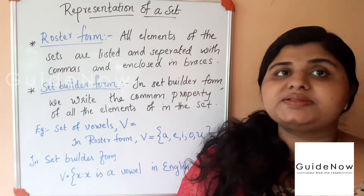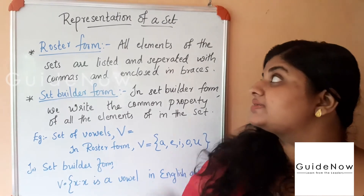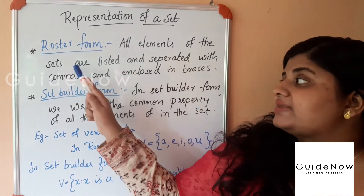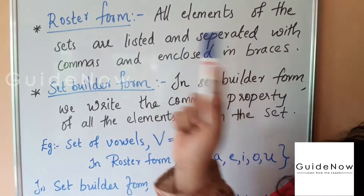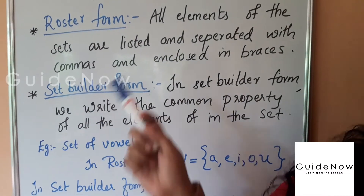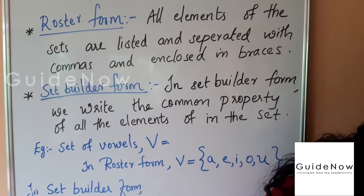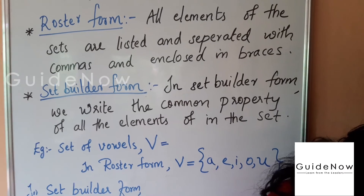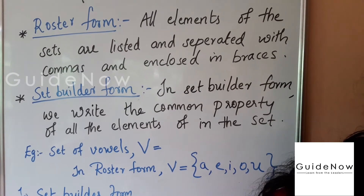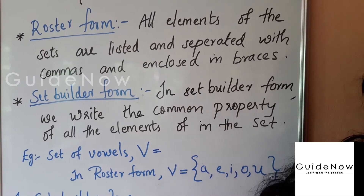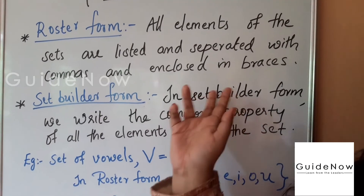The first representation is roster form. In roster form, all elements of the set are listed, separated by commas, and enclosed within curly brackets.